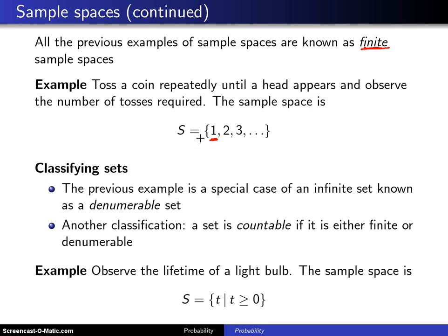How do you have a head appear on the first trial? Well that's simply tossing a head. How about the first head appearing on the second toss? That would be a tail and a head. How about the third toss? That's tails, tails, heads.